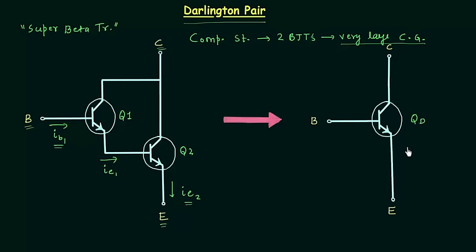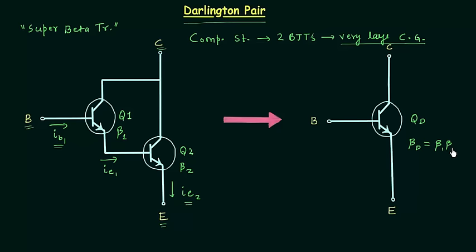We can consider these two transistors as a single transistor and call it the Darlington transistor Qd. The current gain of the Darlington transistor is beta_d. The current gain of the first transistor is beta1 and the current gain of the second transistor is beta2. We need to find beta_d, which is equal to beta1 multiplied by beta2. We will prove this shortly.